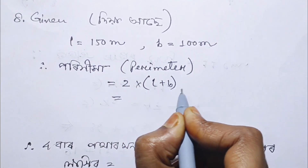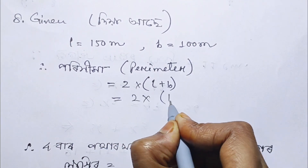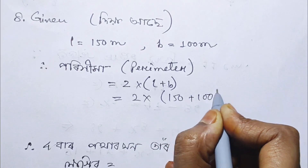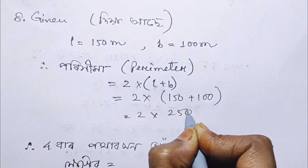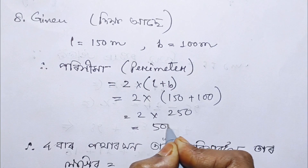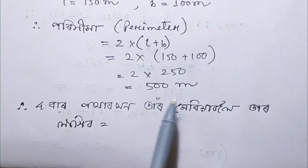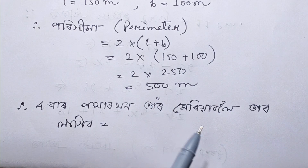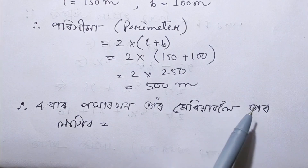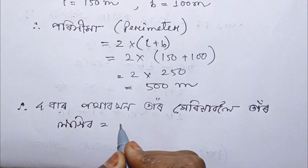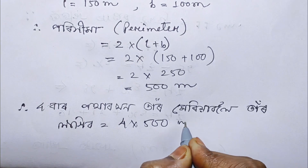Perimeter = 2 times (L + B) = 2 times (150 + 100) = 2 into 250 = 500 meters. Total string for 4 rounds = 4 into 500 meters = 2000 meters.